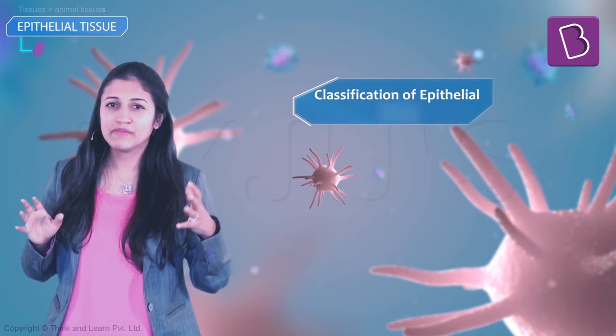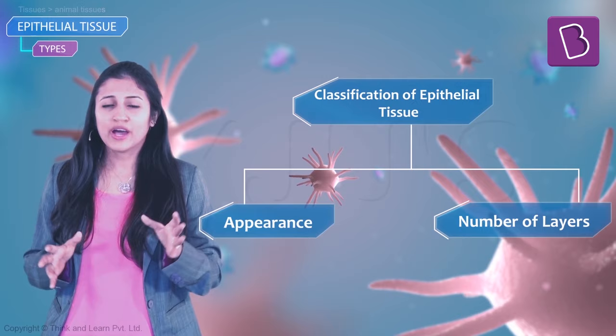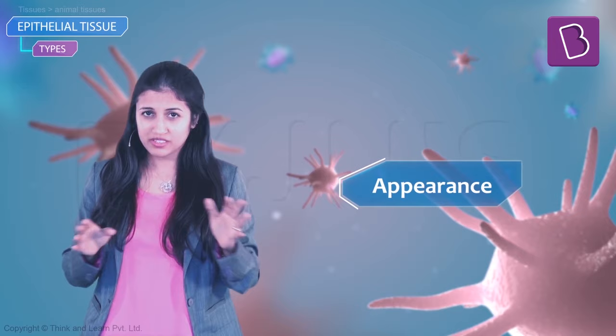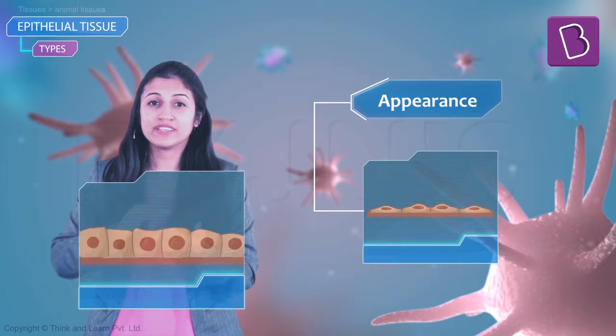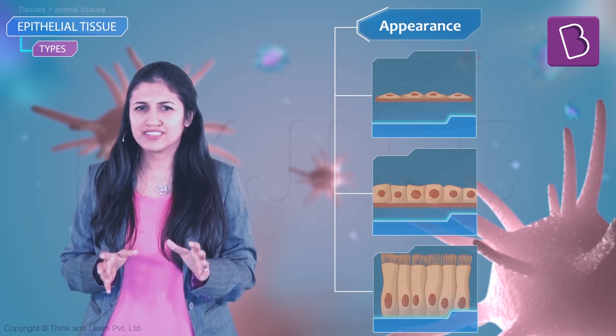Epithelial cells are classified based on how many layers there are and how they look. Based on how they look, there are just three types: they can be like a line, like a cube, or like a cylinder.